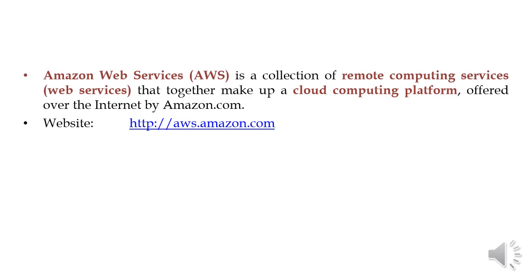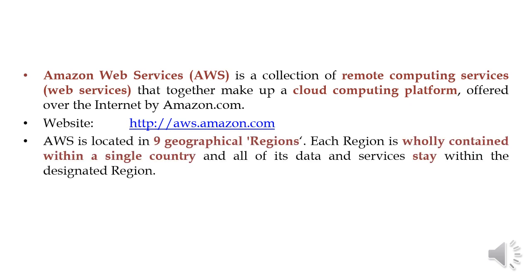So what is AWS? AWS is a collection of remote computing services or web services that together make up a cloud computing platform offered over the internet by Amazon.com. The website is http://aws.amazon.com. AWS is located in 9 geographical regions.